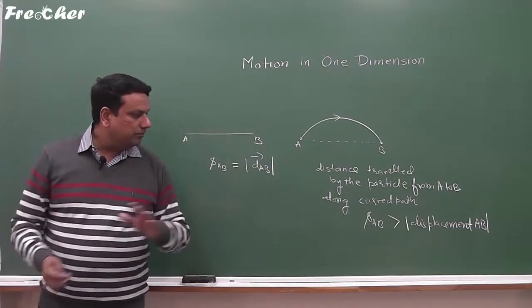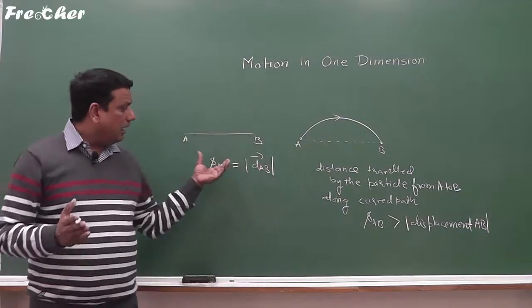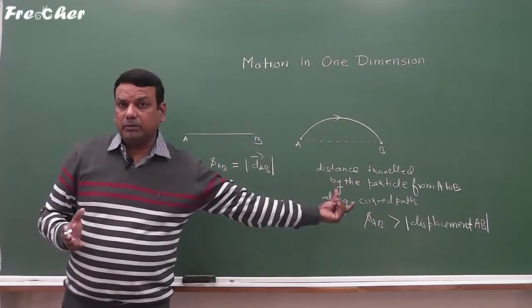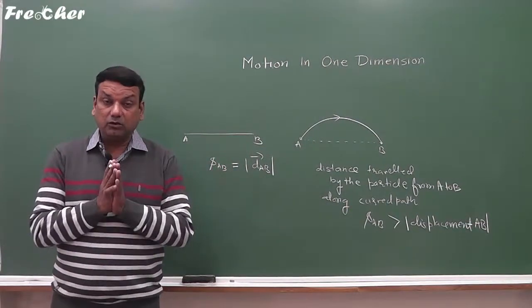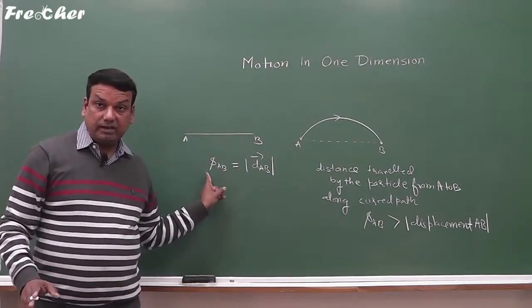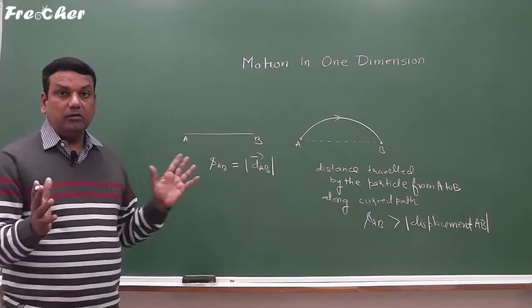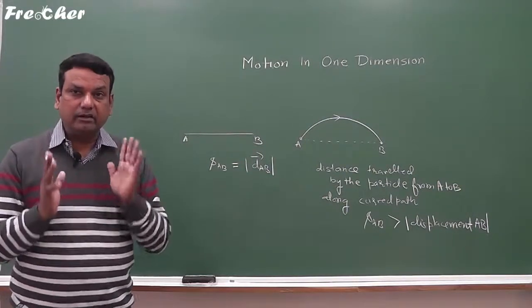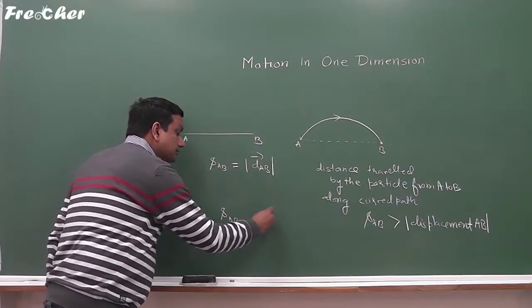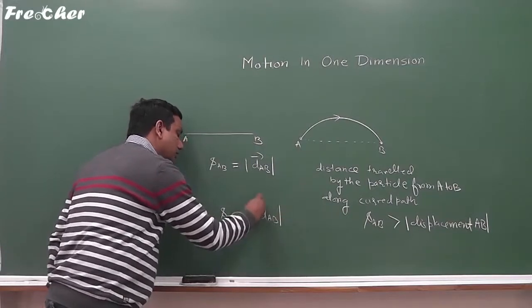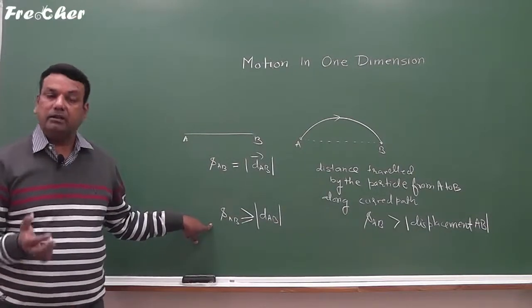In this way, we can conclude that distance is either greater than the magnitude of displacement, or it is equal to the magnitude of displacement. No case is possible in which distance is less than the magnitude of displacement. Hence, we finally establish that the magnitude of displacement of a particle is always less than or equal to the distance travelled by the particle.